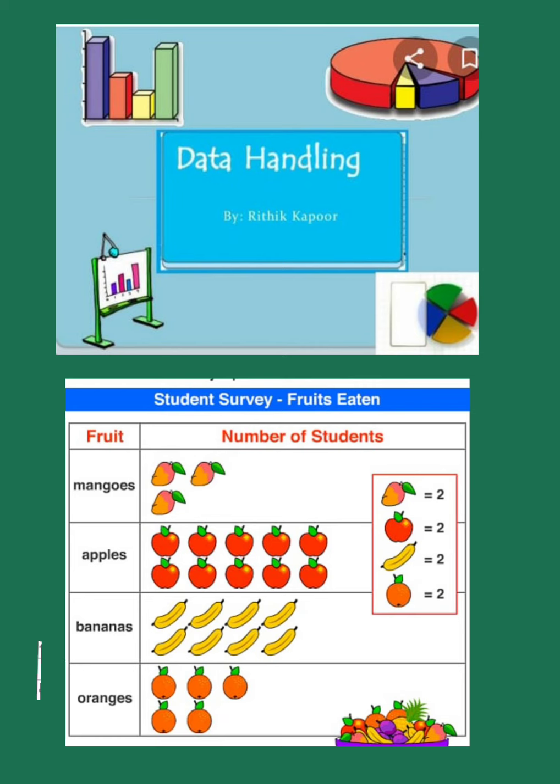Kids, can you see this picture? This is an example of pictogram. Pictogram helps us, we just have to see the pictures and we can get information, we can read what they want to say. Can you see the first column? It is the name of the fruits. The second column title is 'number of students'. So this is a survey done about which fruits are liked more by the kids.